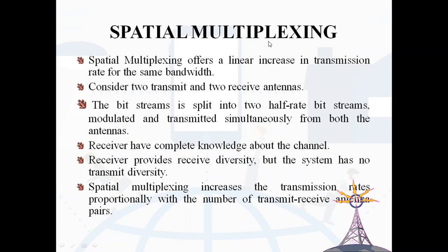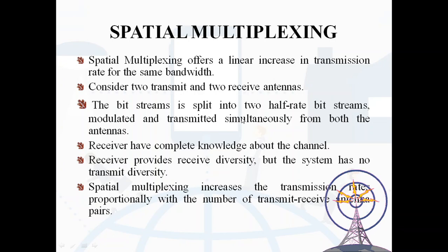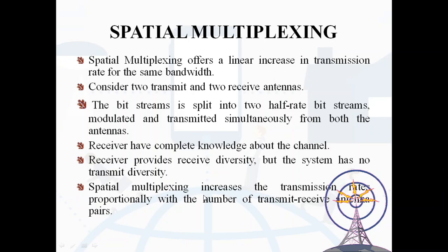Spatial multiplexing offers a linear increase in transmission rate for the same bandwidth with no additional power. Considering two transmit and two receive antennas: the bit stream is split into two half-rate bit streams, modulated, and transmitted simultaneously from both antennas. The receiver has complete knowledge of the channel and provides receive diversity, but the system has no transmit diversity. Spatial multiplexing increases transmission rates proportionally with the number of transmit-receive antenna pairs.